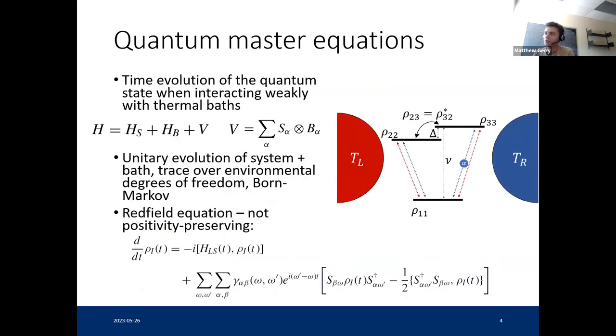The approach that we are going to take towards studying these kinds of systems is using quantum master equations. You have some quantum system, like a few levels, coupled to an environment, which is described by its own Hamiltonian, and then some interaction Hamiltonian that couples the system and bath. Generally, the way that quantum master equations are derived from microscopic principles is to take the evolution of the system plus bath to be just unitary, but then trace over the environment. We don't want to track the environmental degrees of freedom and just get an equation of motion for the system, the reduced density operator of the system.